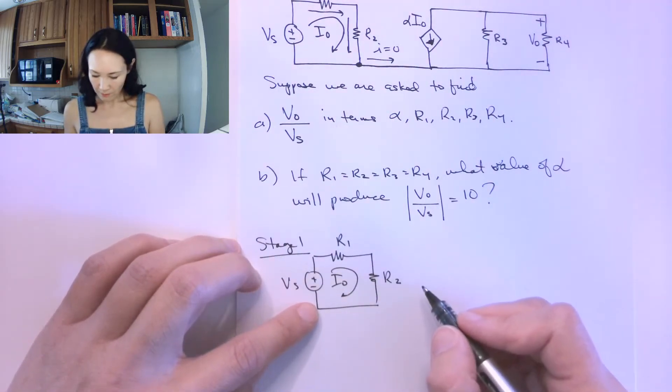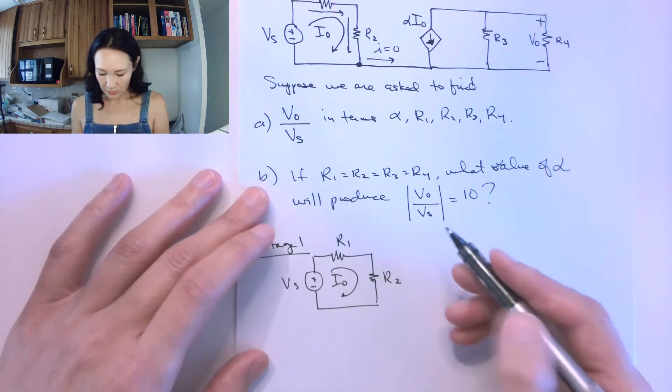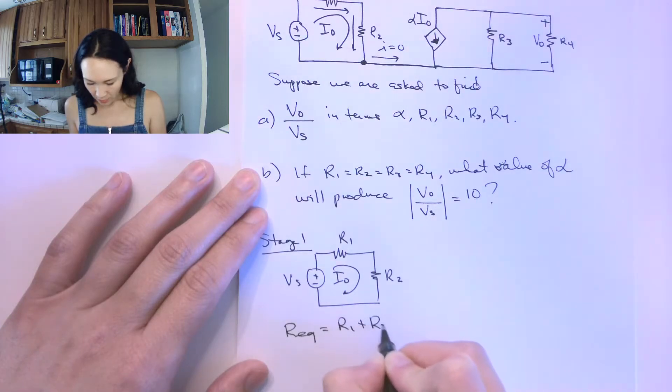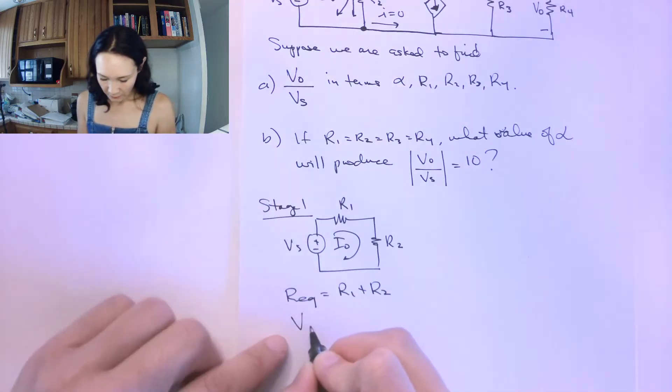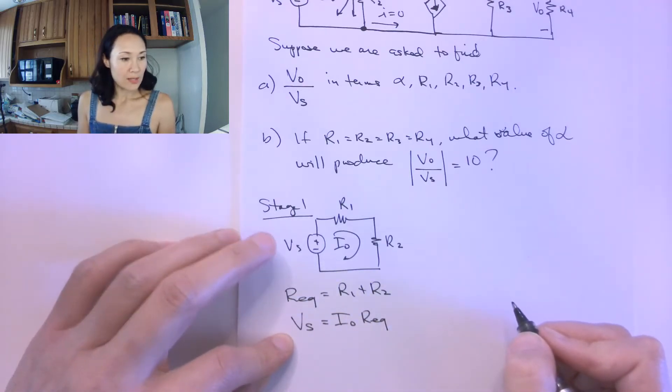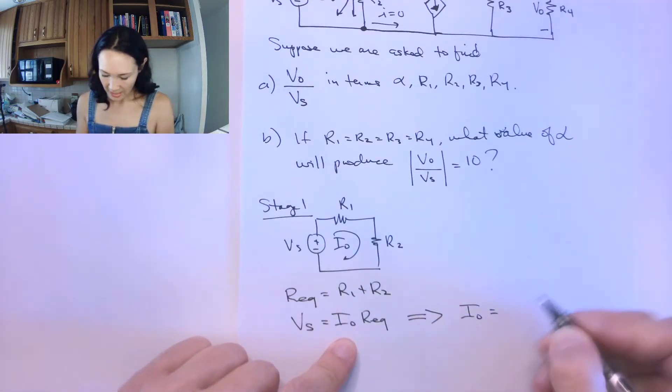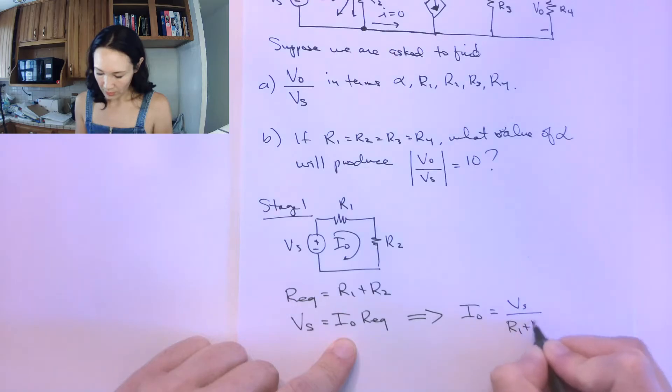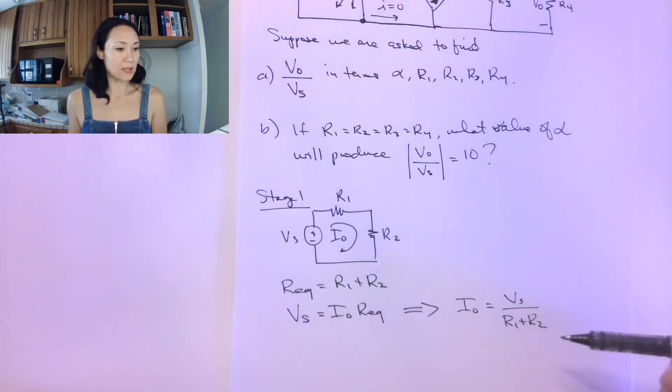Using what we know about series circuits, we know that R1 and R2 are going to combine in series, so they're just going to add. Since it's in series, we know that our R equivalent is R1 plus R2. We also have Ohm's law, so Vs equals I0 times R equivalent. This implies that my expression for I0 can be written as Vs over R equivalent, which for this series circuit is R1 plus R2. So I now have an expression for I0 in terms of Vs and my resistors. Great.